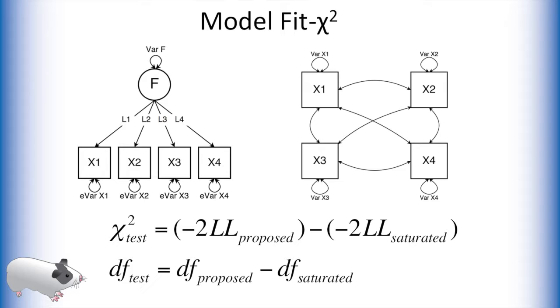However, the chi-square statistic has its limitations. Many believe it to be overly stringent. The chi-square statistic is also sensitive to large sample sizes and will almost always be significant given upwards of 300 observations. So, researchers developed other methods of assessing model fit.